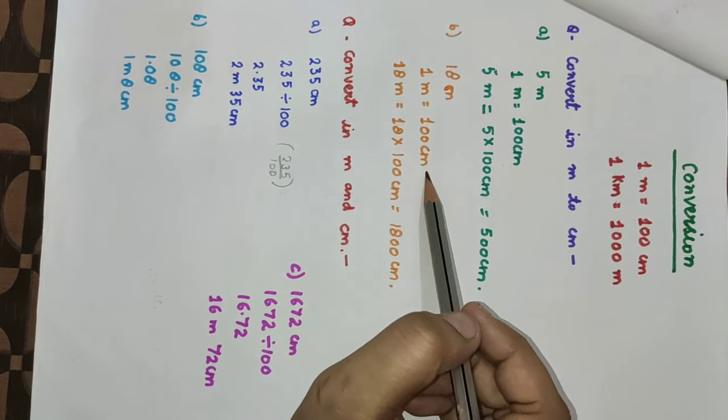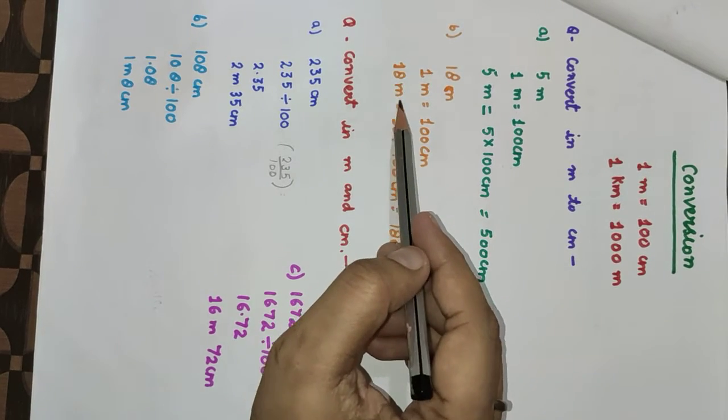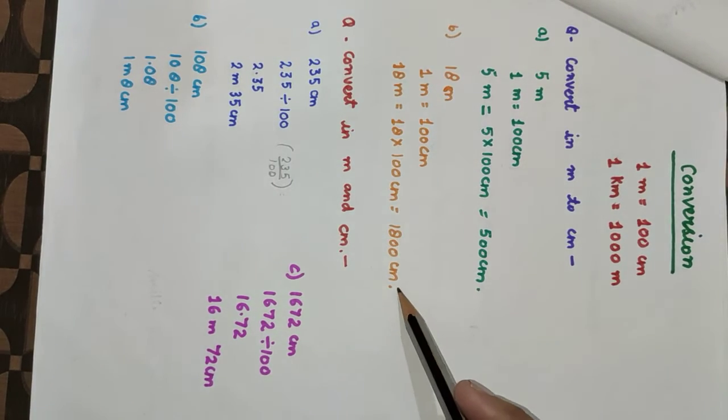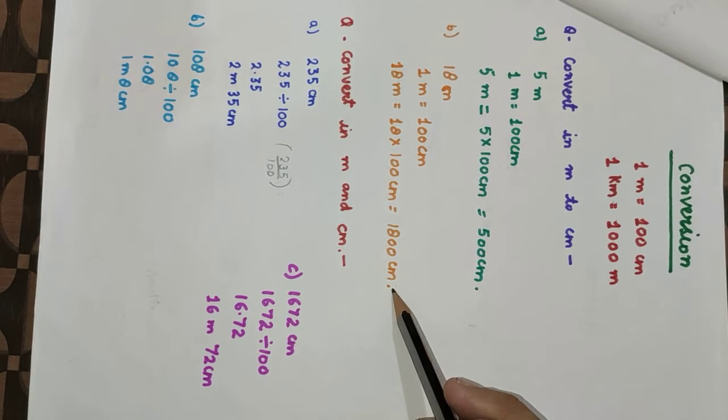18 meters: 1 meter equals 100 centimeters, so 18 meters equals 18 multiplied by 100, which equals 1800 centimeters.